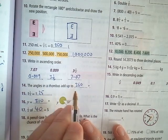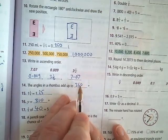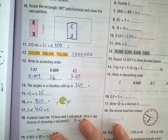Number 14. The angles in a rhombus add up to 360 degrees because a rhombus is a four-sided shape, a quadrilateral. They always add up to 360.